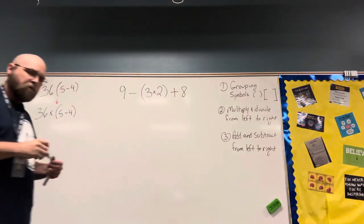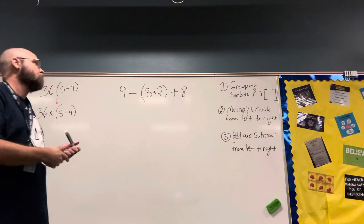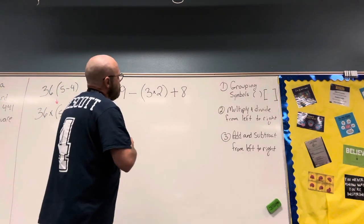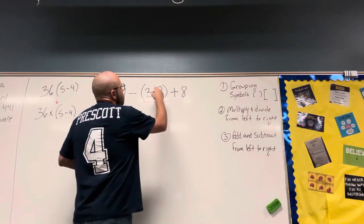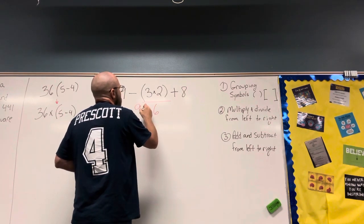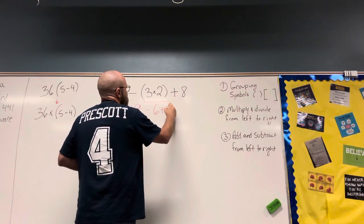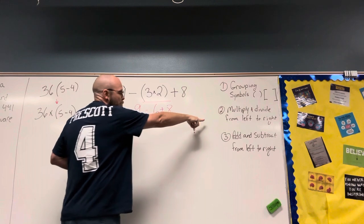Now we start. Step one is to look for our grouping symbols. In this we do have parentheses: 3 times 2 is 6. So now we end up with 9 minus 6 plus 8. We don't have any more multiplication.